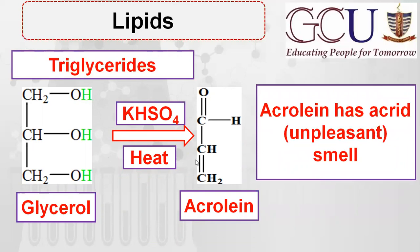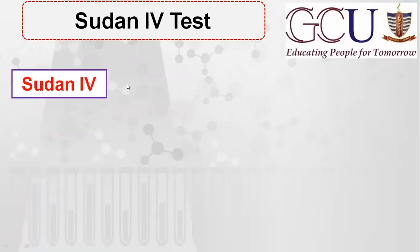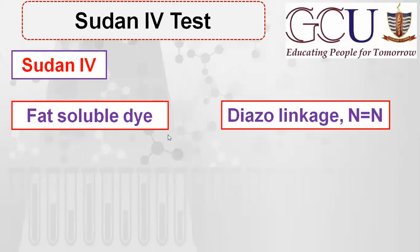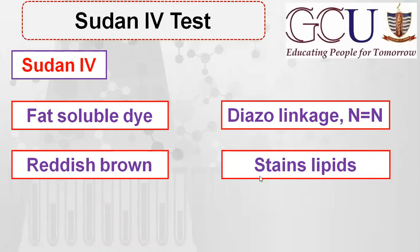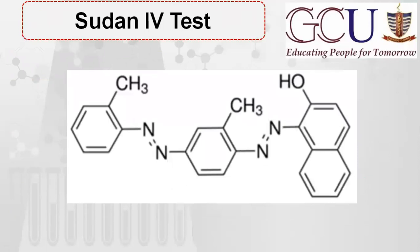Another test is the Sudan 4 test. Sudan 4 is a fat-soluble dye containing azo groups, and it has a reddish-brown color. It is used to stain lipids. For staining, Sudan 4 is first mixed in propylene glycol; some people also use isopropyl alcohol or ethanol instead of propylene glycol.